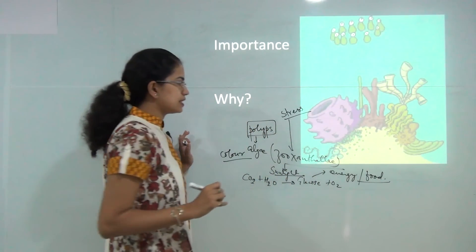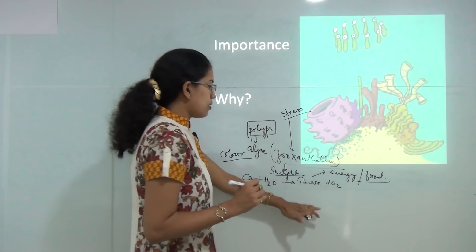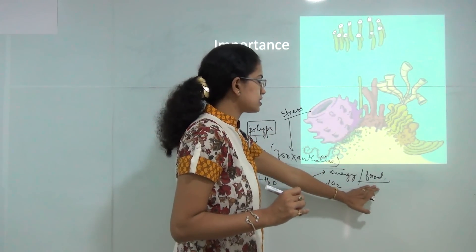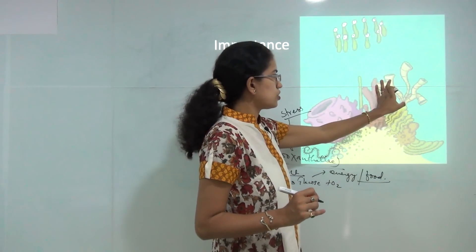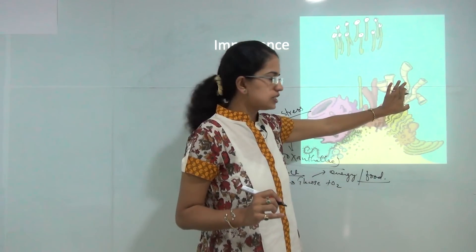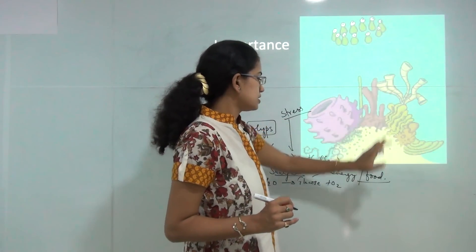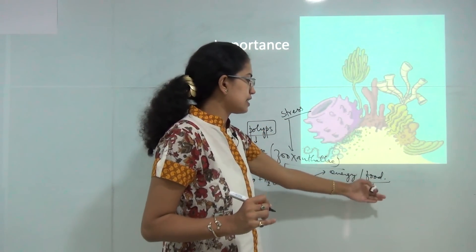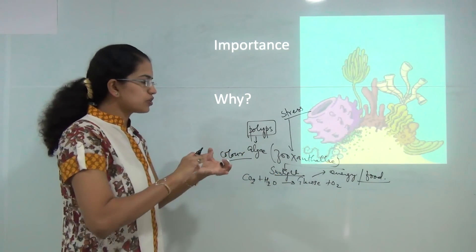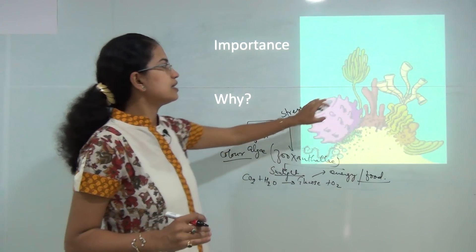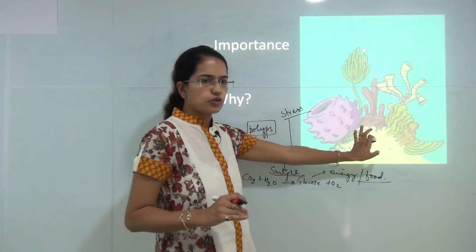Once the zooxanthellae comes under stress it would stop producing the food. The first thing it would do is stop providing source of energy to the corals. The second drawback is since it would move away from the coral, it won't provide the beautiful colors to the coral.